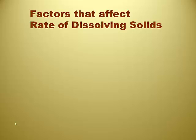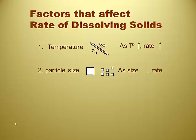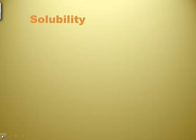Factors that affect the rate of dissolving solids: Temperature — the hotter something is, the more you can dissolve, and the rate of dissolving goes up. Particle size — it's easier to dissolve tiny pieces than a large chunk; as particle size decreases, the rate increases. Mixing — the more you mix, the faster things dissolve, like stirring sugar into tea. And the nature of the solvent or solute — polar things dissolve better in polar substances.